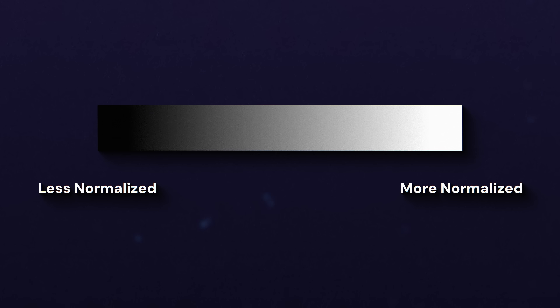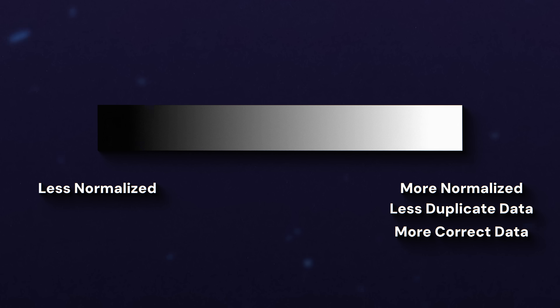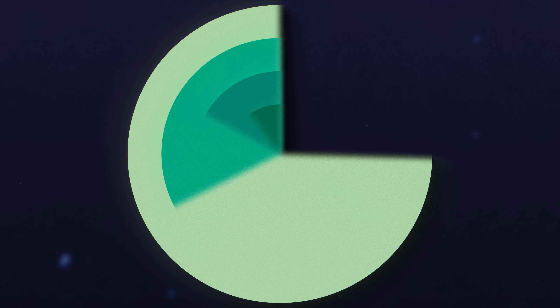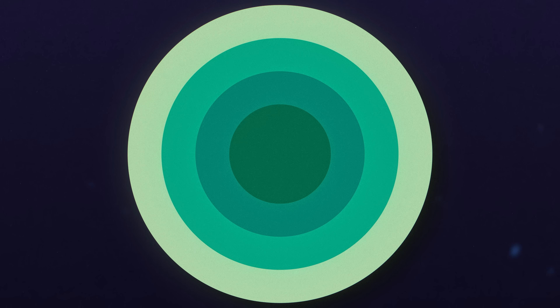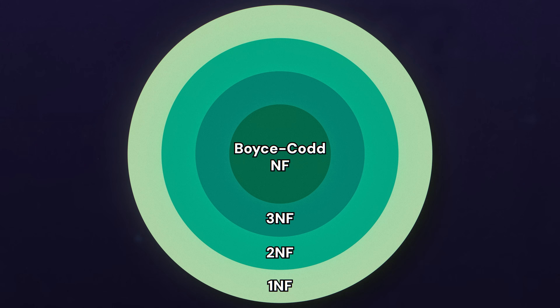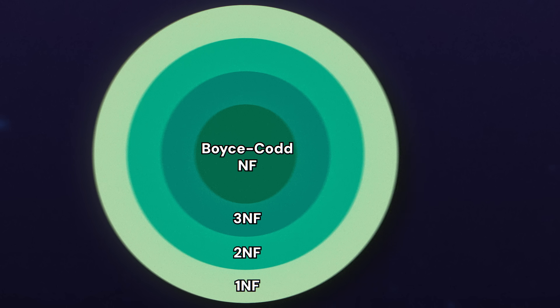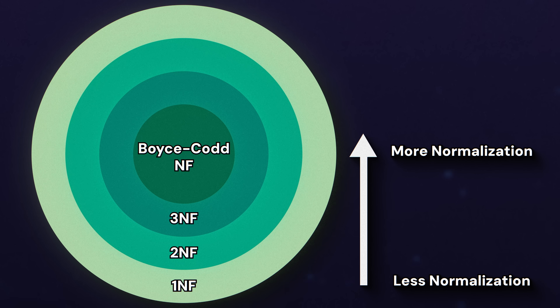And normalization is a gradient. You can have a database that's more normalized or one that's less normalized. The more normalized the database is, the less duplicate data you have, and the more correct the data is likely to be. Academics have defined four different normal forms: first, second, third, and Boyce-Codd. As we move up from first to second to third to BCNF, the database becomes more and more normalized.